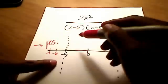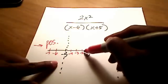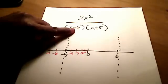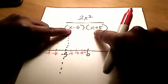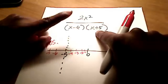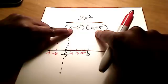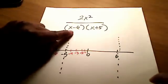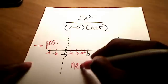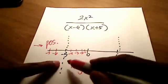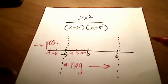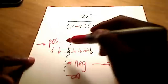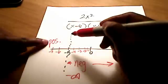Now let's see what happens approaching negative 5 from the right. Take a value like negative 4: negative 4 minus 6 is negative, but negative 4 plus 5 is positive. So the denominator has a negative times a positive, which is negative. The numerator is positive since it's squared. A positive over a negative is negative, and in fact all values between negative 5 and 6 give a negative result. So approaching negative 5 from the right gives negative infinity.